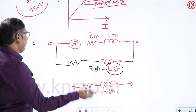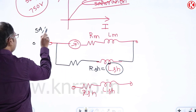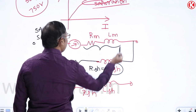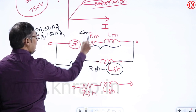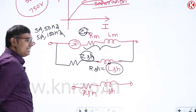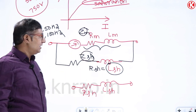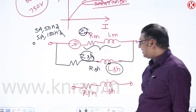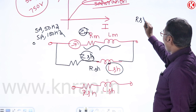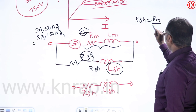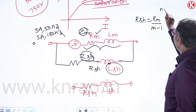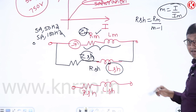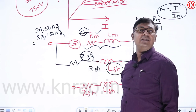For the shunt values: Rsh = Rm / (M−1), where M is the multiplication factor (required current range divided by available current range). For the shunt inductance, the condition is that the time constant of the shunt coil equals the time constant of the meter: Lsh/Rsh = Lm/Rm, giving Lsh = (Lm/Rm) × Rsh.